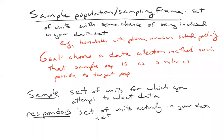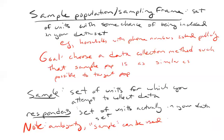The warning I want to put here is that there's ambiguity in these terms. The word 'sample' is often used, including by me, to describe the people — the units who are actually in your dataset. So in other words, the definition I just gave for respondents can be used as a definition for sample. The word 'sample' can be used to describe units actually in your dataset.